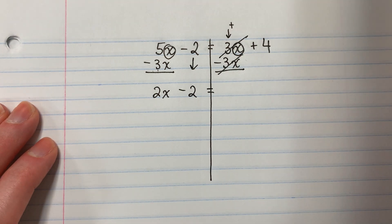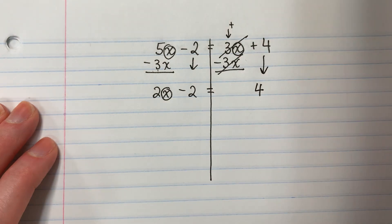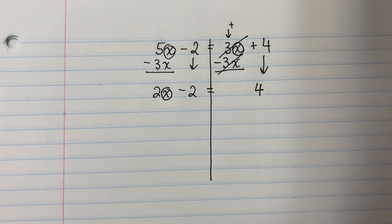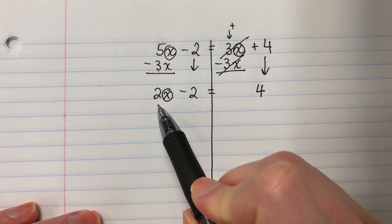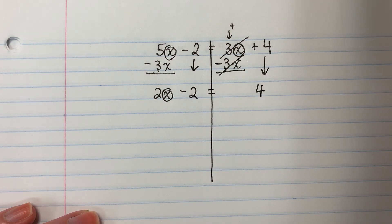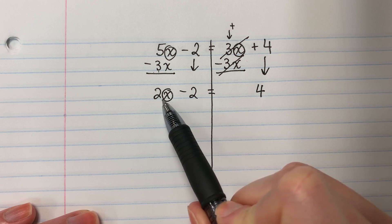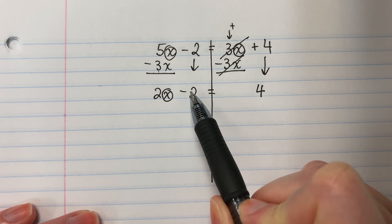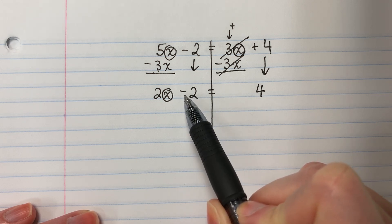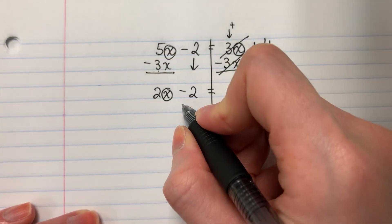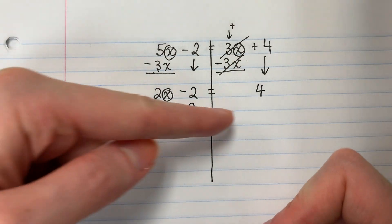Copy 4. Circle the letter — enciera la letra. I want the x alone. Quiero la x sola. But I have two numbers with x — pero tengo dos números con x — 2 and negative 2. Remember, never move the number with the letter first. Recuerda, nunca vamos a mover el número con la letra primero. So I will not move the 2 — no voy a mover el 2 — because it's with the x. I will move the other — voy a mover el otro. This is minus 2 — es menos 2 — the opposite is positive. El opuesto es positivo. So plus 2, and copy horizontally.